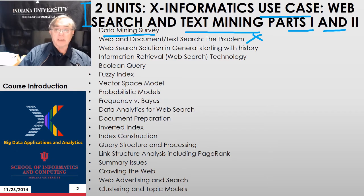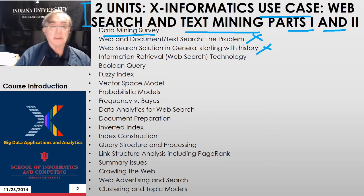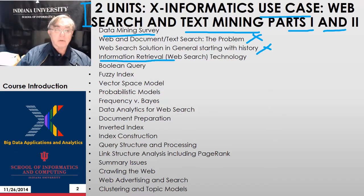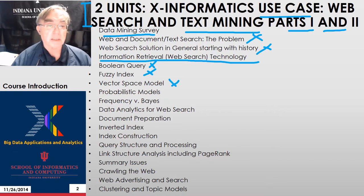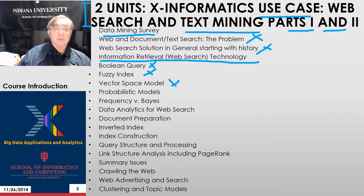We define the web and text search problem and discuss the history of libraries. The core information retrieval technology is actually pretty old. Some techniques like Boolean queries, fuzzy indices, and the vector space model are foundational. The key idea is mapping abstract problems into spaces, and one of the more powerful methods is based on that.